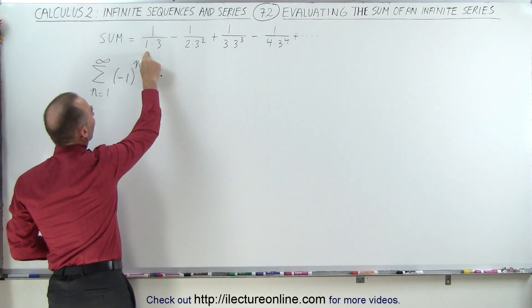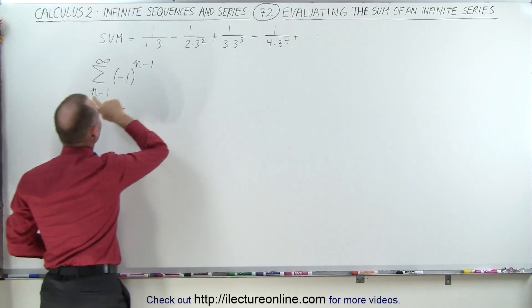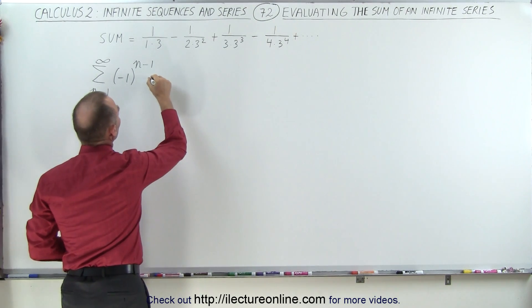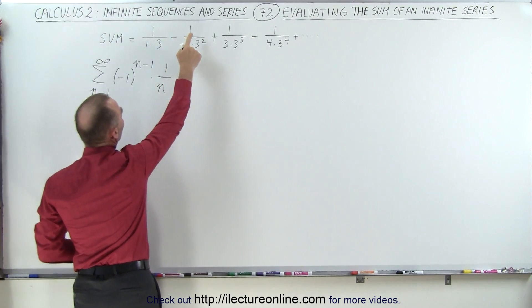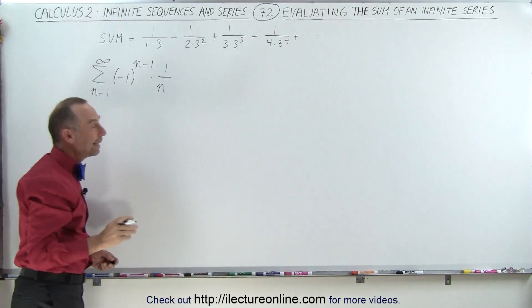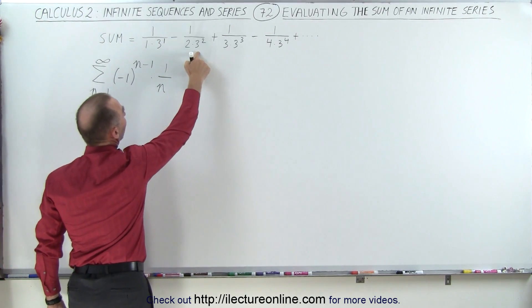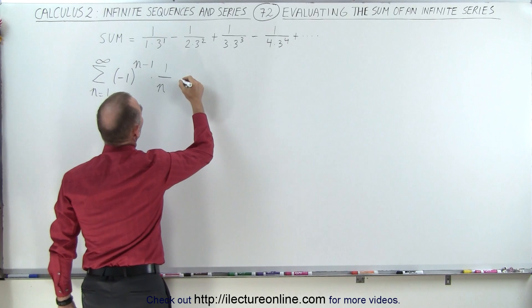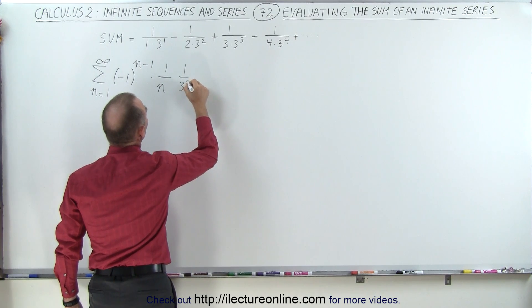Now, we also see that we have 1 over 1, 1 over 2, 1 over 3, so this increases as n increases, so that means we need a 1 over n, so that will take care of the 1 over 1, 1 over 2, 1 over 3. And then we have the 3 to the first power, we can put a 1 there, 3 to the second, 3 to the third, and so forth. So we can write this as 1 over 3 to the n power.